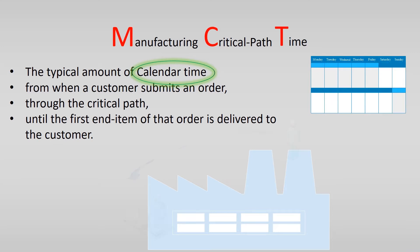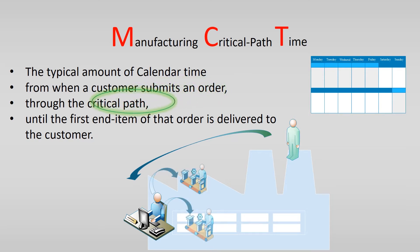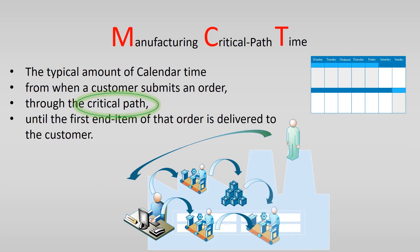We start measuring the time as soon as the customer submits an order, because we look at the customer's perspective for starting the clock. The critical path is more difficult. We will come to the calculation of the critical path in a later video and explain what to include and exclude in the calculation.